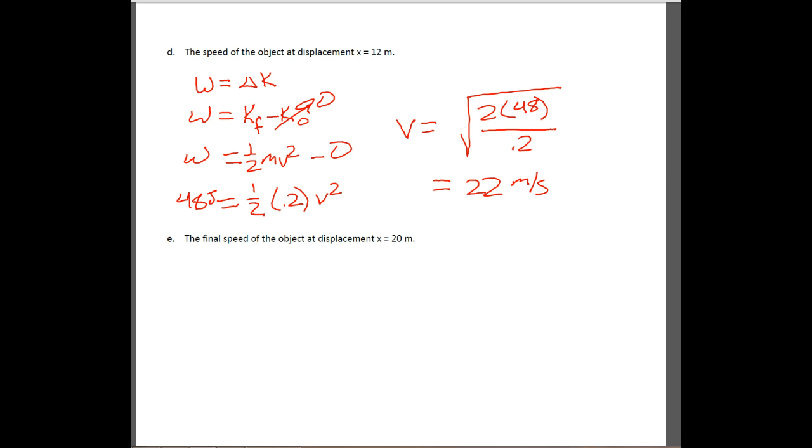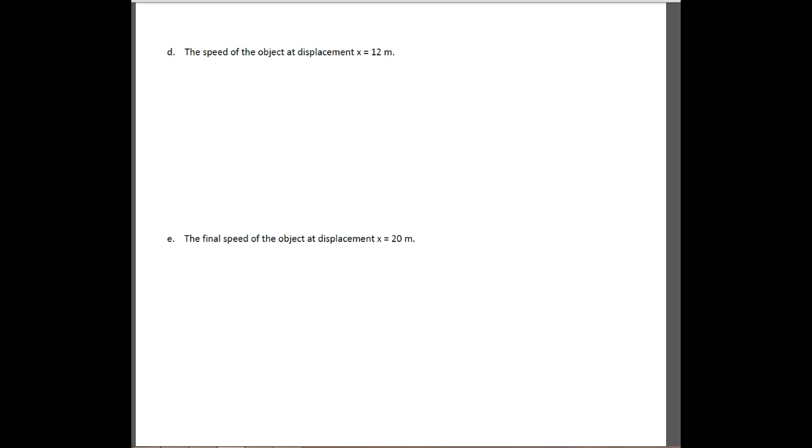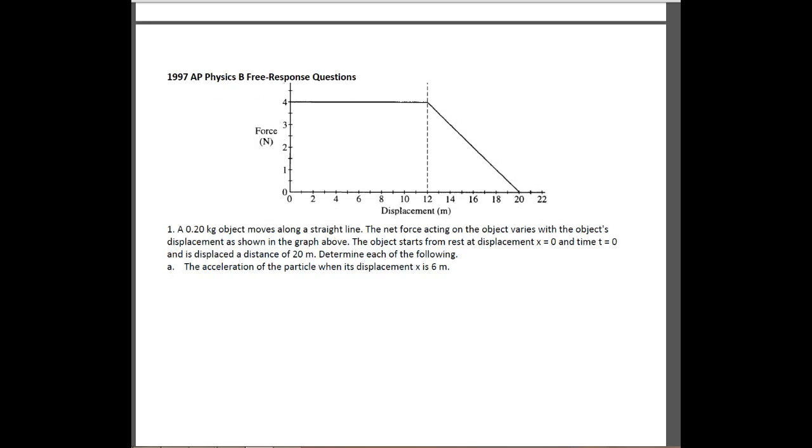The very last thing that they want us to do is they do want us to go through and try to find out what is the speed of the object at the very end, so at a displacement of 20 meters. What we need to do on this one is go back to our graph again. And we know that there's a force applied for the first 12.